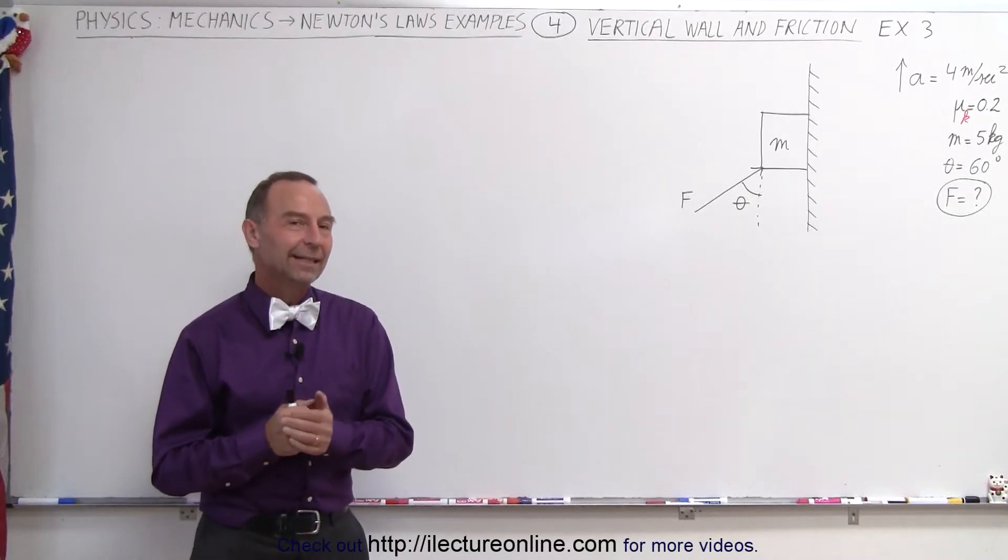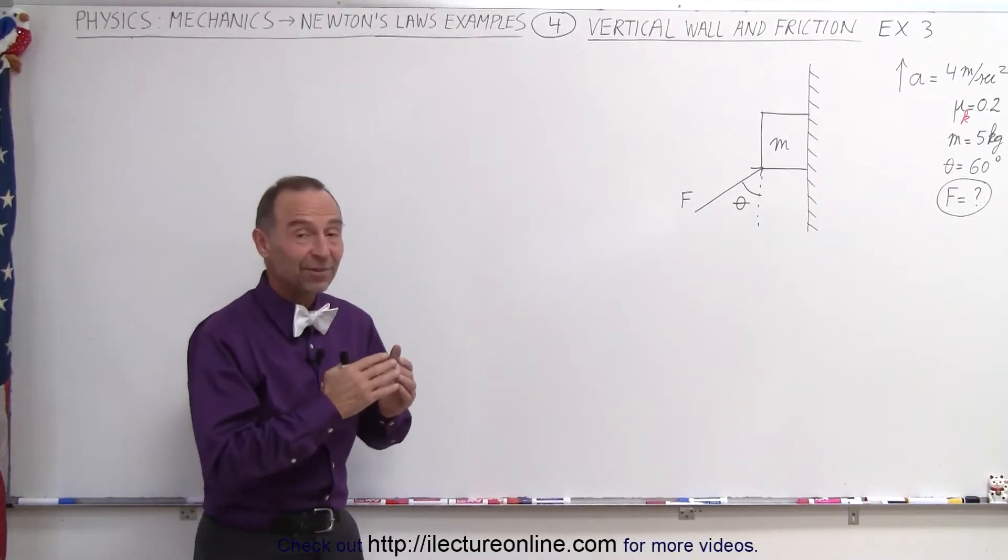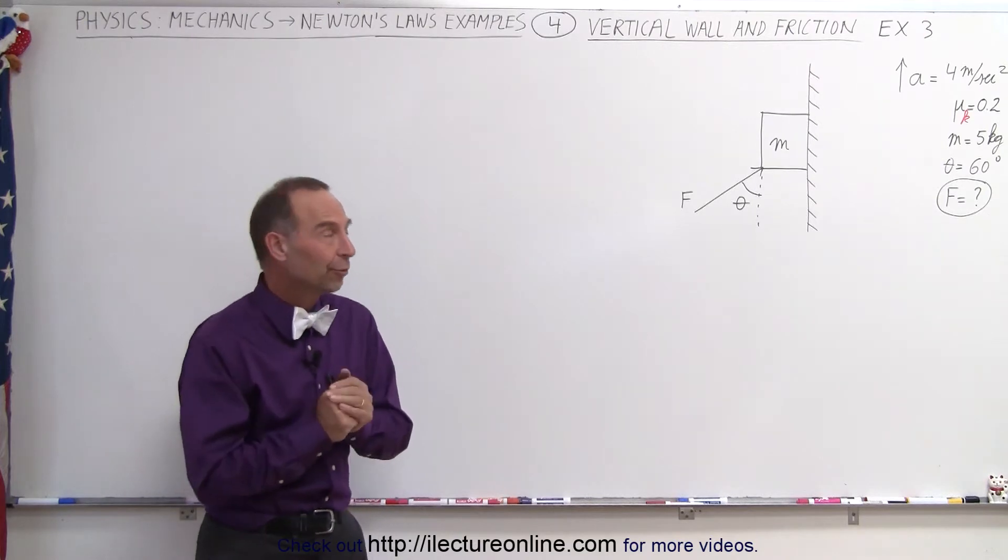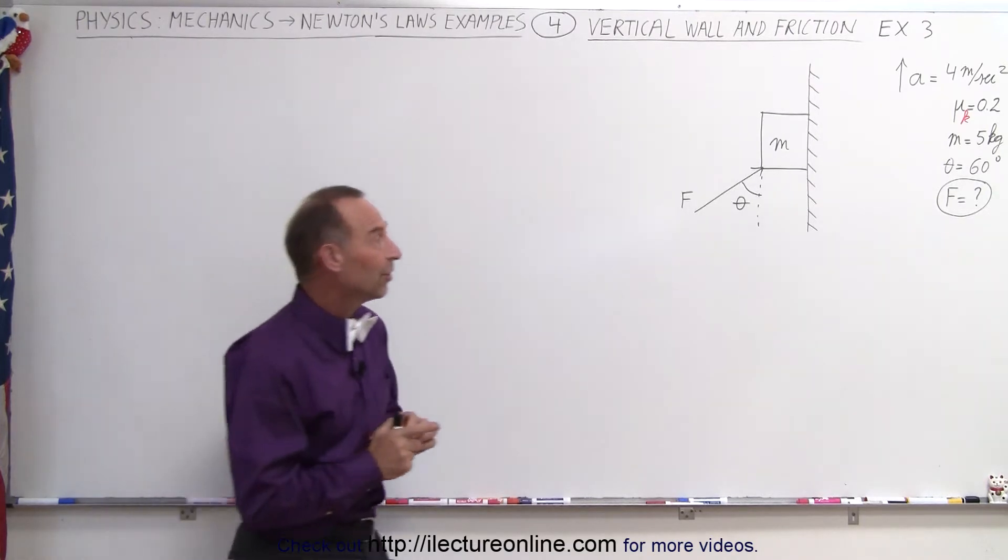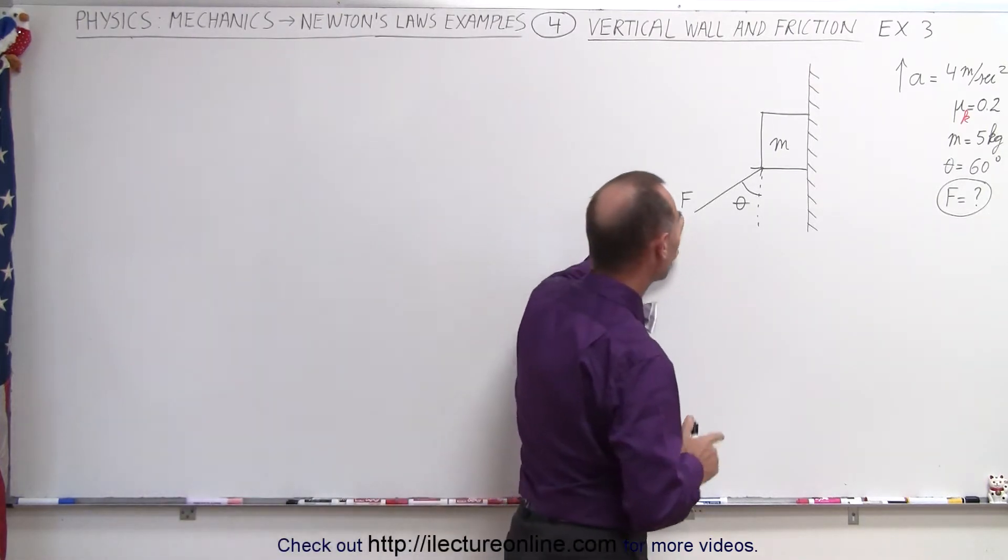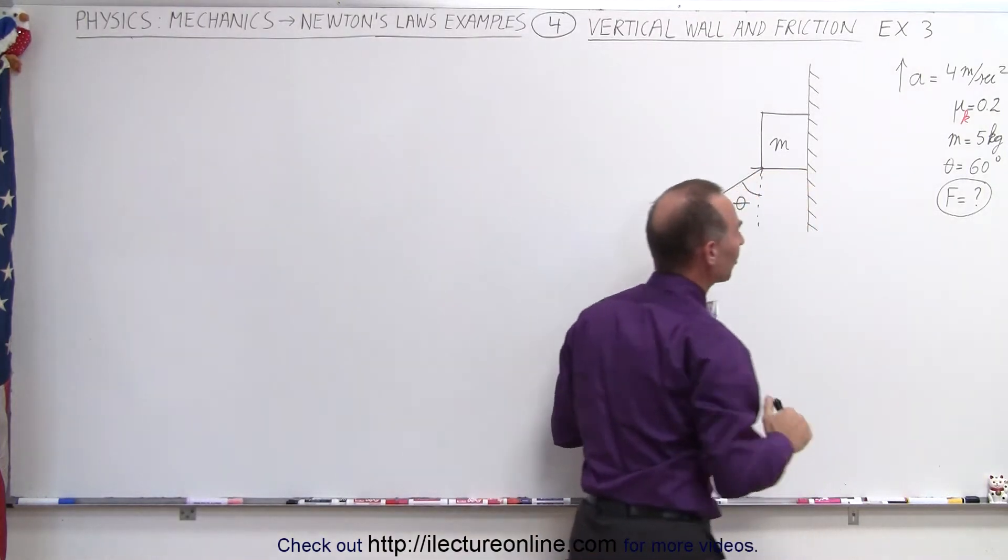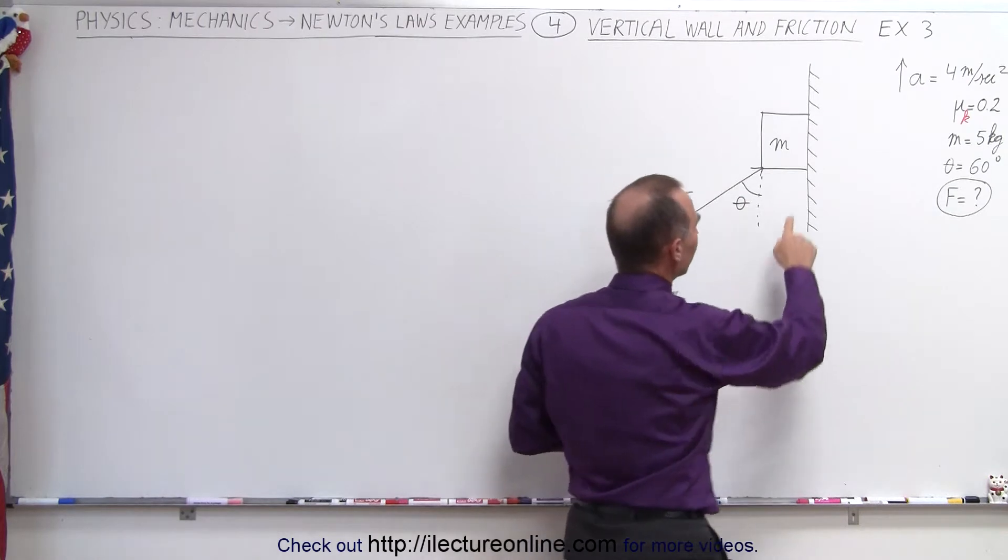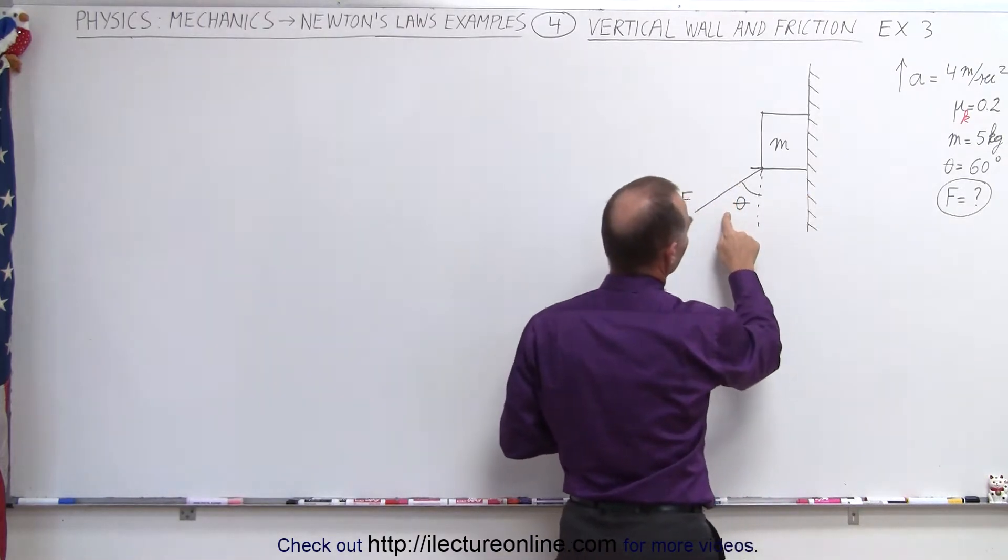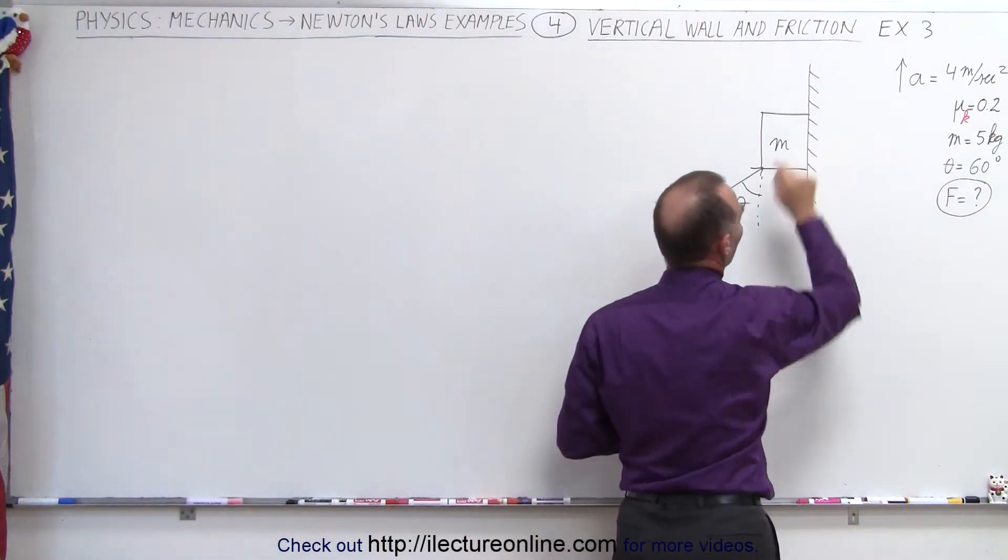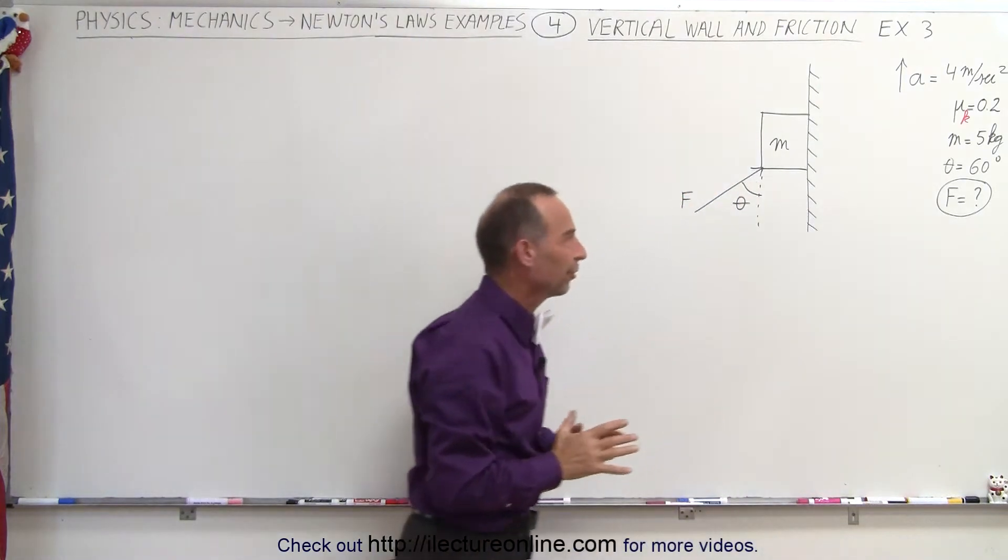Welcome to my lecture online. Now let's take a look at the very same setup again, like we did in the previous two videos, but now what the difference is that we're finding the force required to accelerate the object upward at 4 meters per second squared. We still have the mass equal to 5 kilograms, the angle is still 60 degrees, and the coefficient of kinetic friction is 0.2.